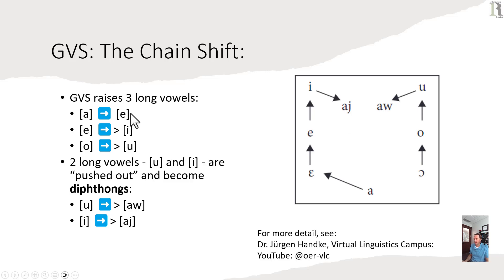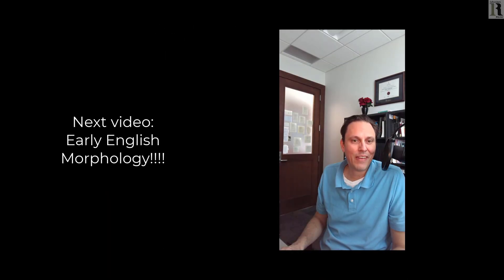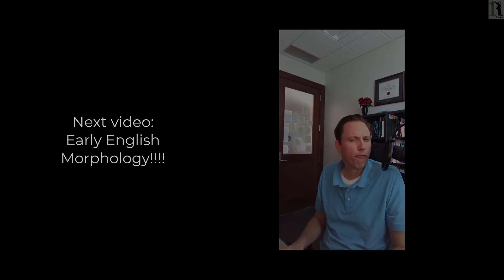So the Great Vowel Shift is a chain vowel shift. The three long vowels A, Æ, O become 'ay,' E, U. Two long vowels — U and I — are pushed out and become diphthongs: I and 'ow.' That's pretty much the Great Vowel Shift. If you want a more detailed explanation, you can go to the YouTube channel of Dr. Jürgen Handke at the Virtual Linguistics Campus — his YouTube account is OER-VLC. That's it for this video — see you next time when we talk about morphology.